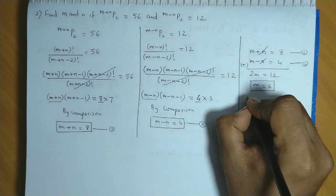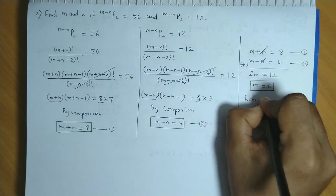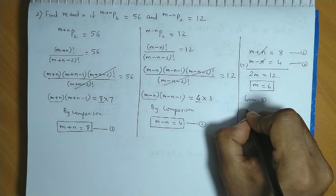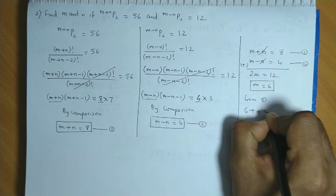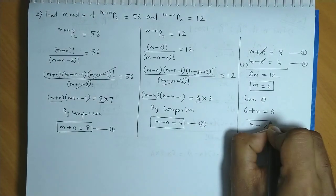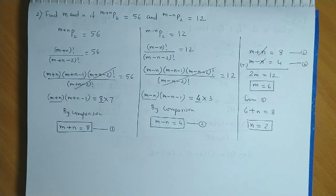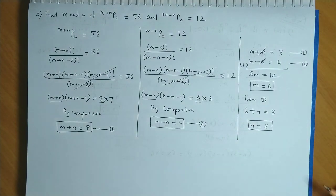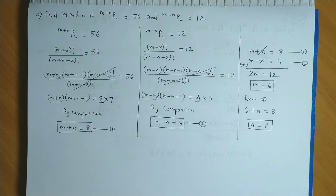Now we got the value of m, so we could use equation 1. From equation 1, m plus n equals 8. So 6 plus n is equal to 8. So from here we get n equal to 2. So the required values are m equal to 6 and n equal to 2.